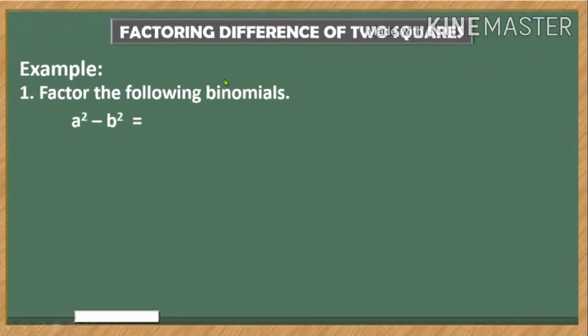We're factoring the difference of two squares binomials. In this case we have a² - b². In the first term, our base is a, and in the second term our base is b. What we will do is simply copy the two bases and write the operation addition, and we do the same here with subtraction operation.